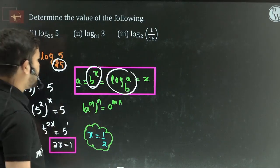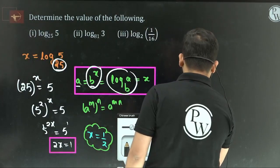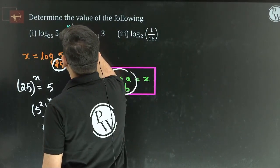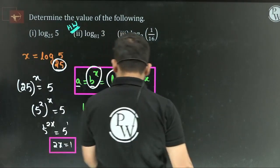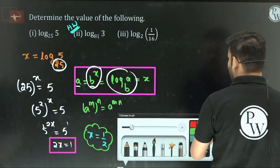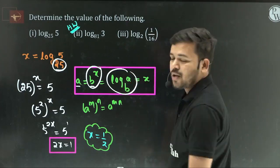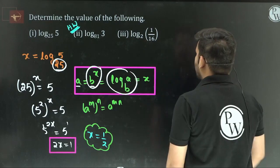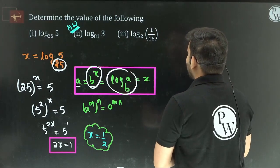This is one way of asking a question. So this is your homework — do it and let me know the answer in the comment section. Now let's move on to the next question. Same type, but here instead of 25, we have 1 by 16 with base 2 — let's solve this.